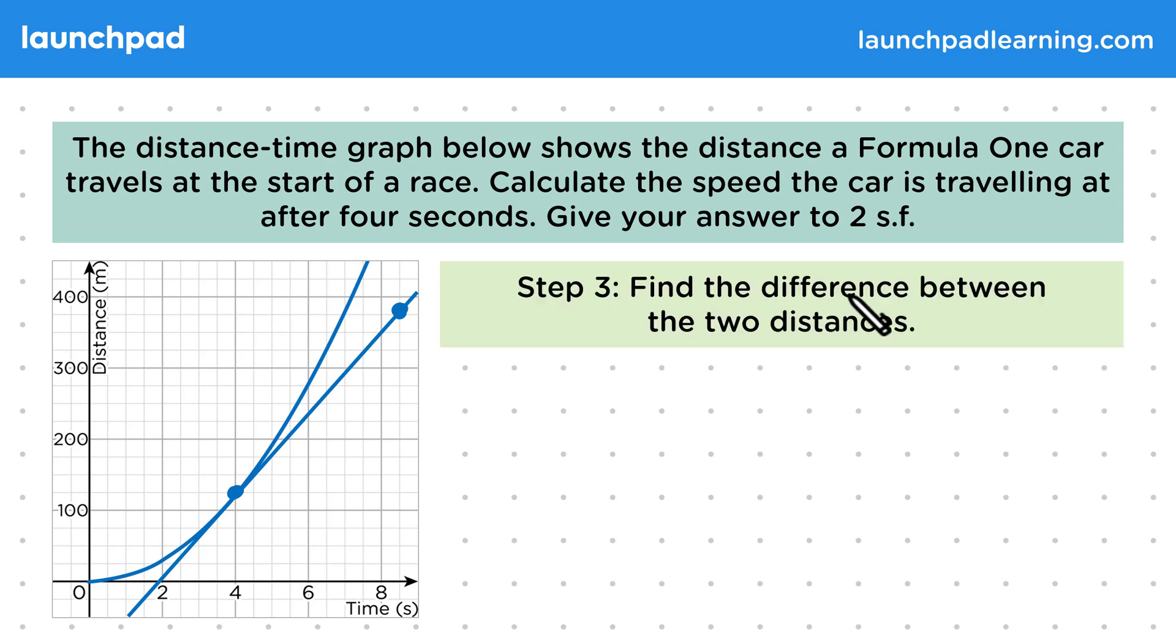In step 3, find the difference between the two distances. The distances of the points that we chose were at 120 metres and 380 metres, so their difference is 380 minus 120, which equals 260 metres.